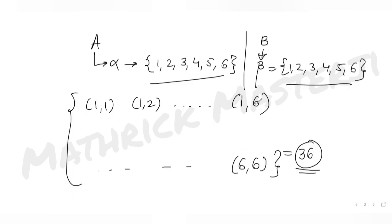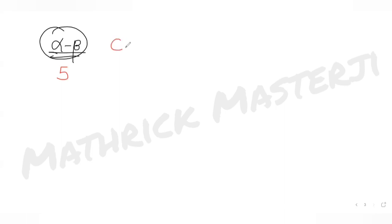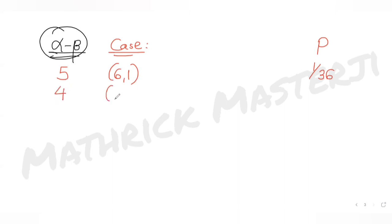For a difference of five, only the outcome (6,1) works — probability is 1/36. For a difference of four, outcomes (6,2) and (5,1) work — probability is 2/36. For a difference of three, outcomes (6,3), (5,2), and (4,1) give probability 3/36.